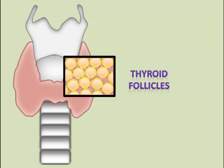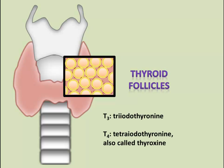The thyroid gland produces two hormones: triiodothyronine (T3) and tetraiodothyronine (T4). The thyroid gland produces mostly T4, around 90%, but T3 is about four times more potent than T4.